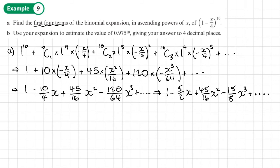OK, part B of this question says, use your expansion to estimate the value of 0.975^10, give your answer to four decimal places.